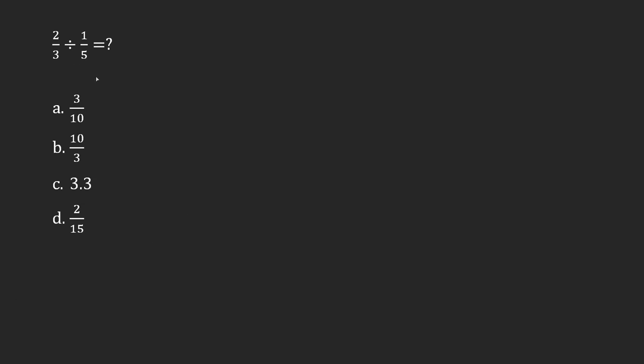the trick when you're dividing one fraction by another is to write the first fraction the same, but the second fraction you're going to switch. So the five is going to go on the top, and the one is going to go on the bottom.